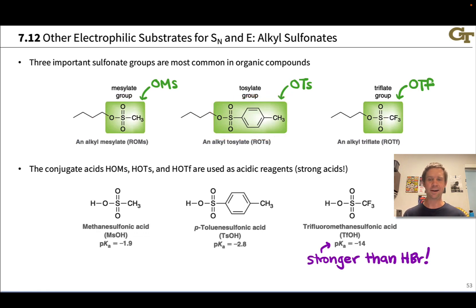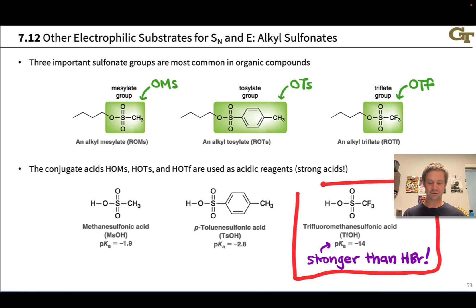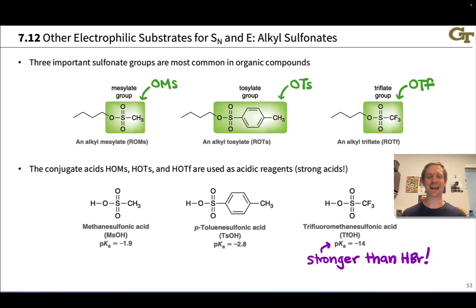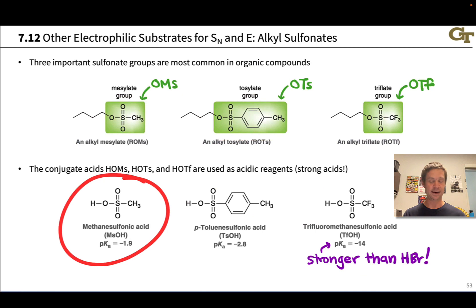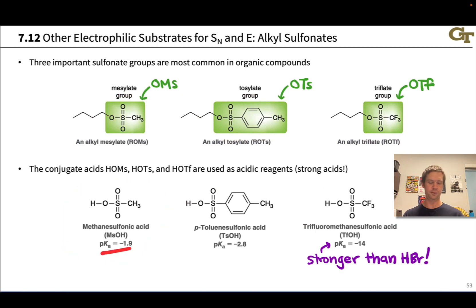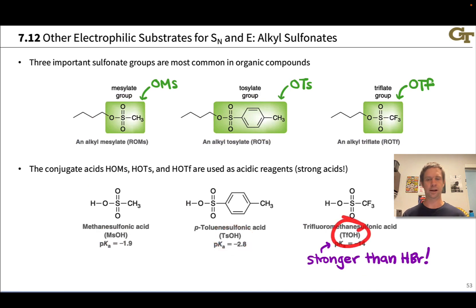The conjugate acids of the sulfonate anions can be used as strong acids, and the pKa values bear this out. Triflic acid (trifluoromethane sulfonic acid) is stronger than HBr, with a pKa of negative 14 — remarkably acidic, more acidic than sulfuric acid. Even para-toluenesulfonic acid and methanesulfonic acid are strong acids based on their pKas. You may see these compounds used as strongly acidic reagents: MsOH, TsOH (probably the most common), and TfOH.